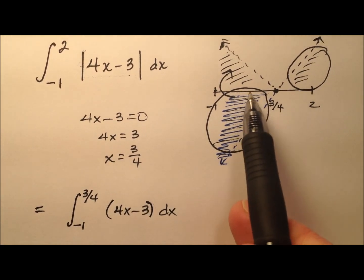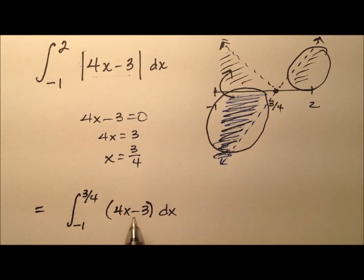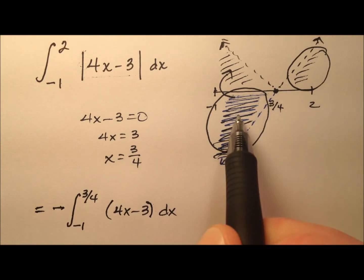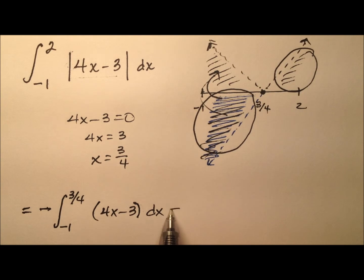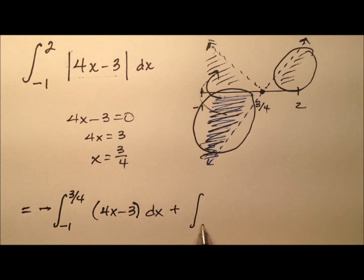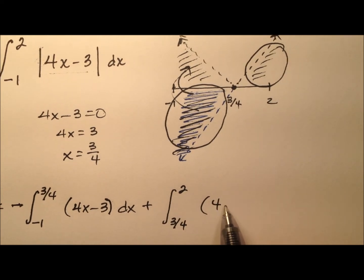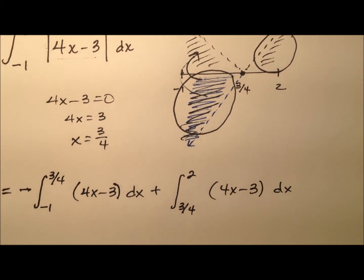But of course, that was the area that was negative. So we're going to go ahead and put a negative sign out front, so we can go ahead and make it positive. And to this integral, we will add the integral from 3 fourths up to 2 of that 4x minus 3 with respect to x.